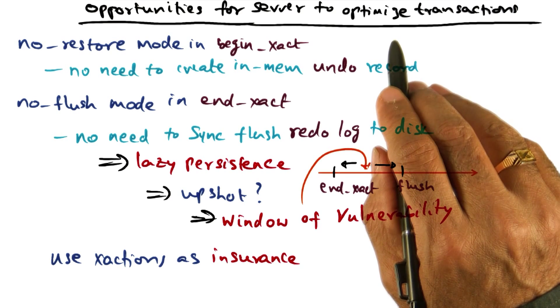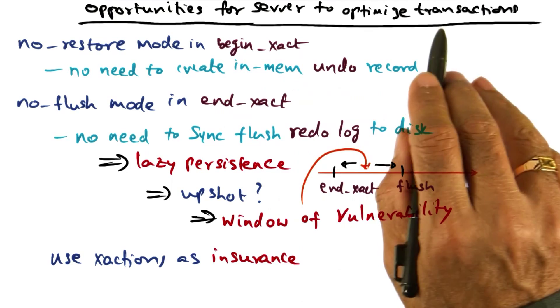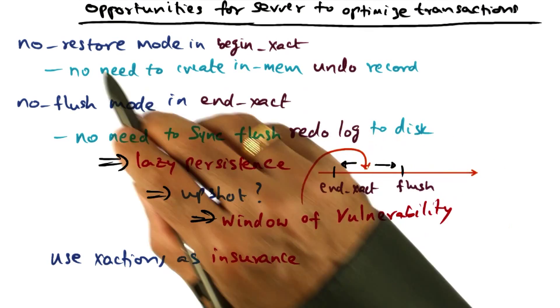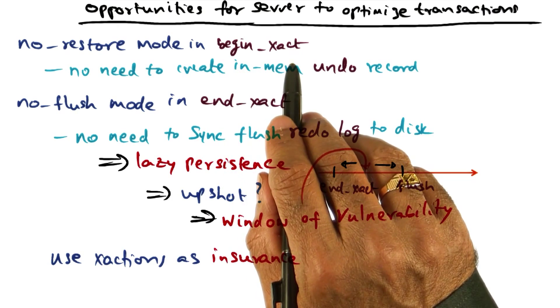But if the developer wants to optimize this performance, RVM gives opportunities for such optimizations. The first opportunity is the no restore mode in the begin transaction call.